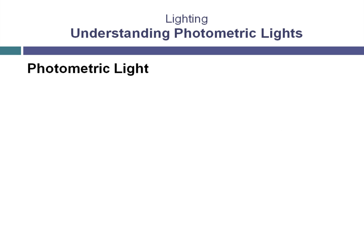Let's learn a little more about the term photometric light. We're going to activate some street lights in the scene to illuminate this street and make it a convincing evening rendering. But first we need to look at the term photometric. So far all the lights we've used have been photometric — they are lights that use real world intensity values.